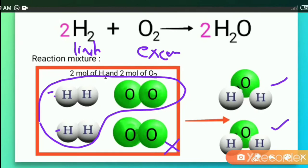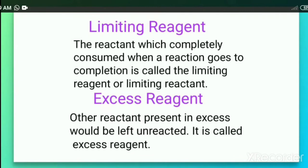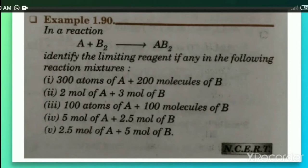This shows that substances in a mixture are not necessarily present in exactly the same amounts as required by the balanced chemical equation. One reagent may be in excess and one may be limiting. The reagent completely consumed in the reaction is the limiting reagent, and the one present in excess is the excess reagent. It will be left unreacted.